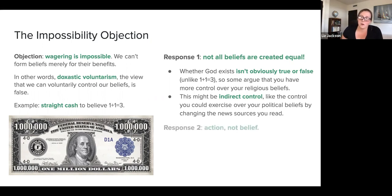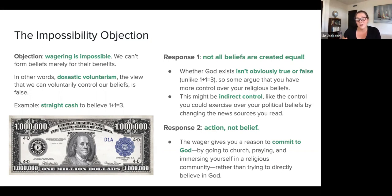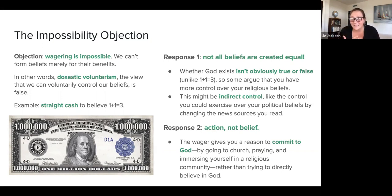Response two is to make Pascal's Wager about action rather than belief. Some argue the wager doesn't necessarily give us a reason to directly believe in God, but gives us a reason to commit to God — going to church, praying, immersing yourself in a religious community — acting as if God exists. If you make the wager about practicing a religion rather than believing, the impossibility objection doesn't arise because we do have control over those actions.